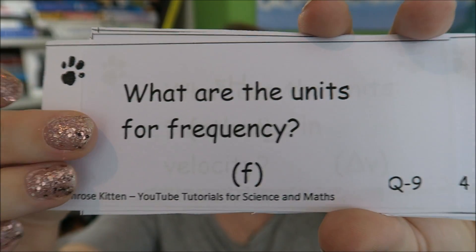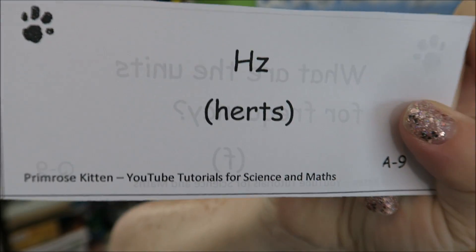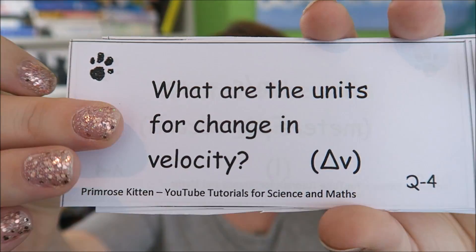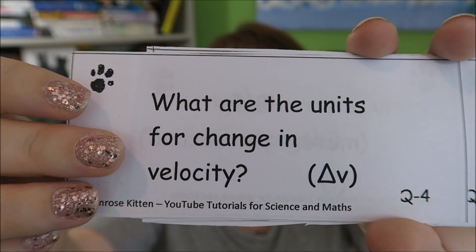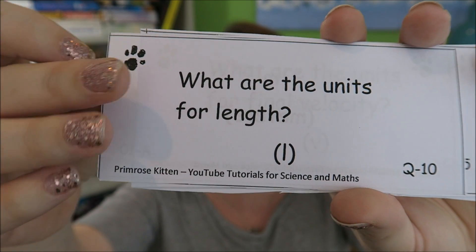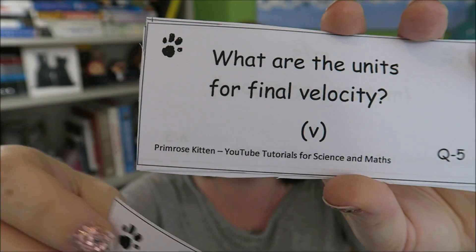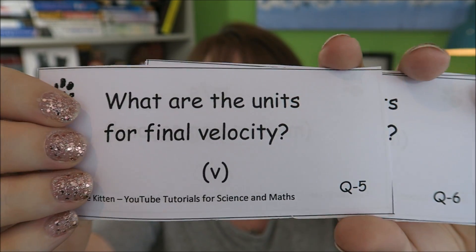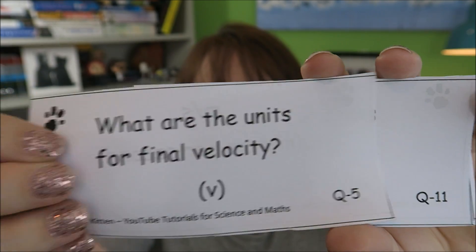What are the units for frequency? Hertz — that is a capital H and a lowercase Z. This is really, really important that you get your capitals and your lowercases sorted right, because you will not get the marks if you do it the wrong way around. What are the units for change in velocity? This is just velocity, so it's meters per second. What are the units for length? Length is measured in meters. What are the units for final velocity? Just another form of velocity, so it's still meters per second.